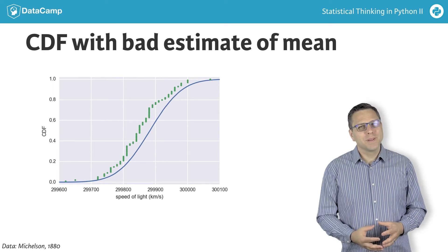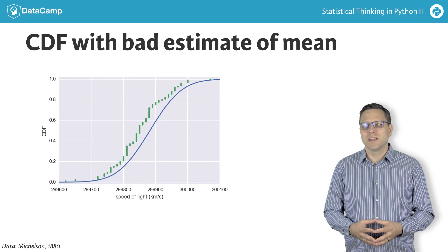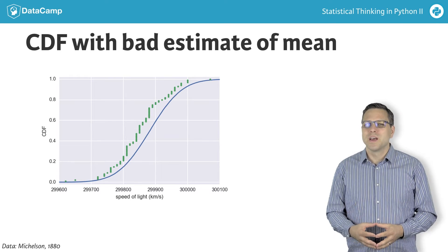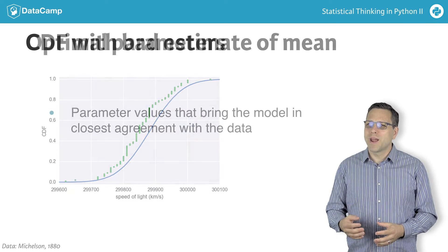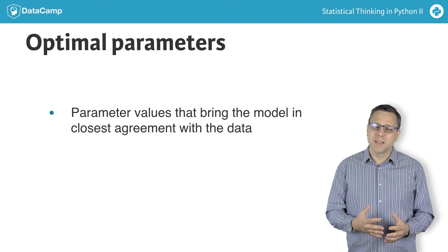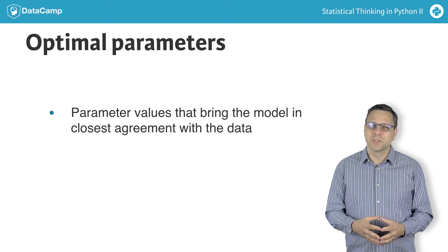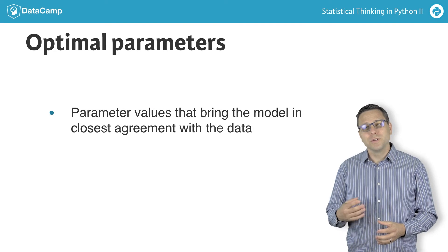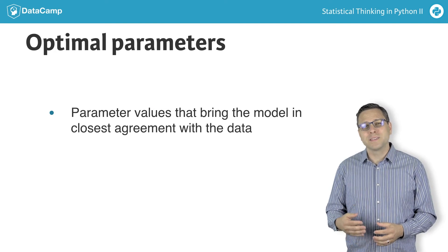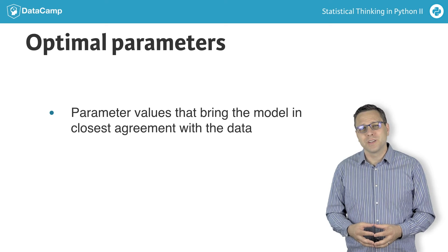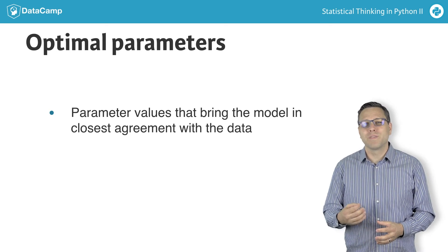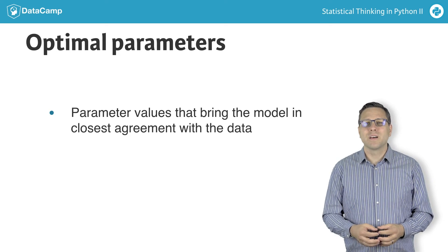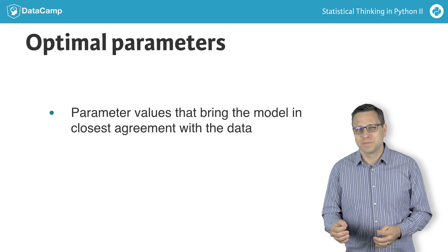So if we believe that the process that generates our data gives normally distributed results, the set of parameters that brings the model — in this case the normal distribution — in closest agreement with the data uses the mean and standard deviation computed directly from the data. These are the optimal parameters.